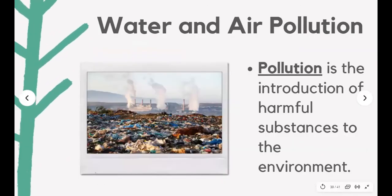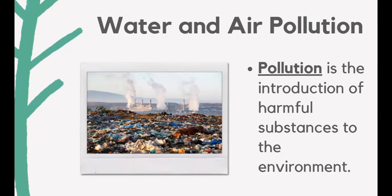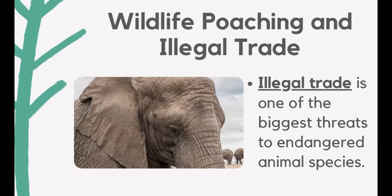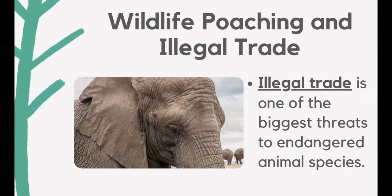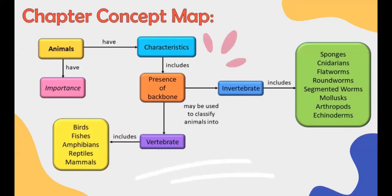Pollution is the introduction of harmful substances to the environment, bringing contaminants into soil, water, and air. Known pollutants include pesticides, aerosol sprays, phosphates from detergents, and metals. Illegal trade is one of the biggest threats to endangered animal species. Wildlife poaching is the illegal hunting, killing, or capturing of wild animals — elephants are killed for their ivory tusks, while tigers are killed for their skin and bones. Animals are also affected by pests that transmit diseases, kill animals, compete for food and habitat, and attack the eggs and young of animals.